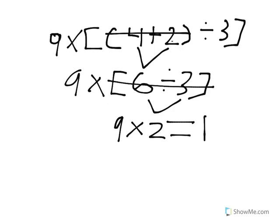And then 9 times 2 is simply 18. And that's how you get your order of operation answer. Goodbye.